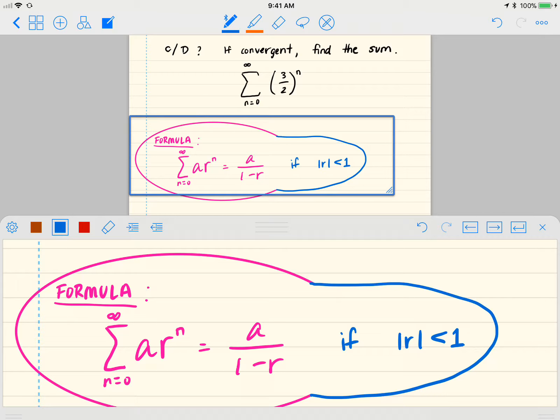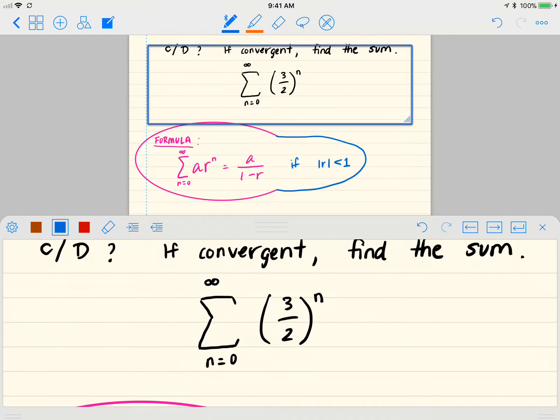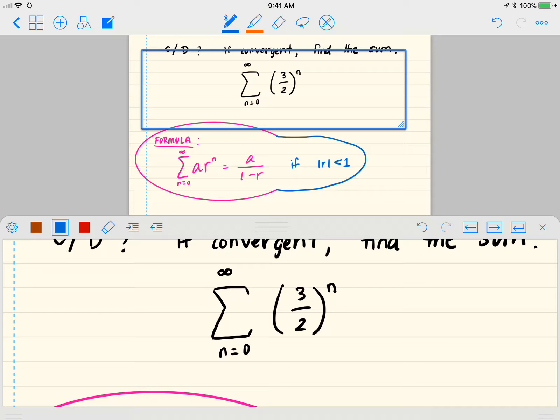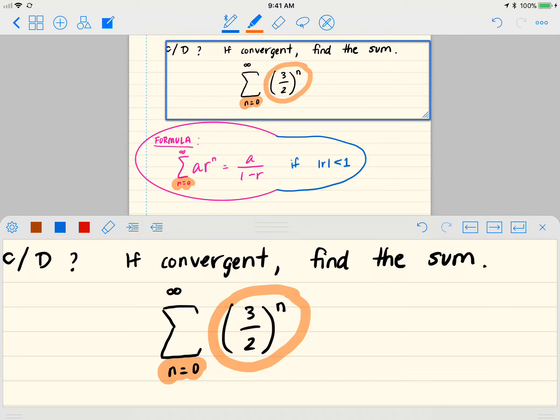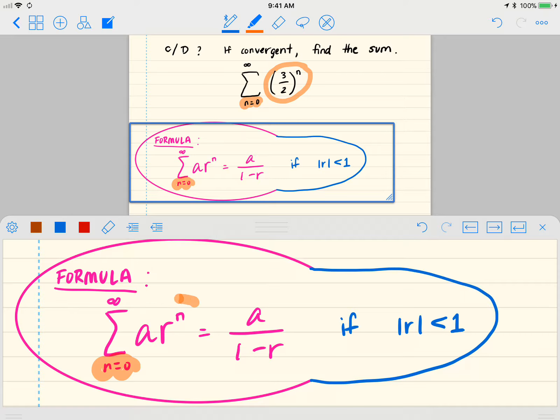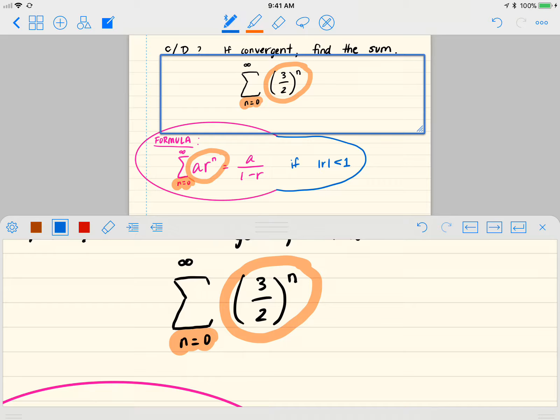So now I'm looking at this a times r to the n, and here everything is similar. n is starting at zero, here n is starting at zero, and we've got to figure out how these terms are equal to a times r to the n. And here's how we'll do it.